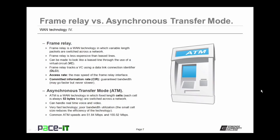Now let's talk about asynchronous transfer mode, also known as ATM. ATM is a WAN technology in which fixed-length cells are switched across a network. These cells are always 53 bytes long. ATM can handle real-time voice and video because it's very fast, but it has poor bandwidth utilization. The small cell size reduces efficiency, but ATM is very fast even if inefficient. Common speeds on an ATM network are 51.84 megabits per second and 155.52 megabits per second.